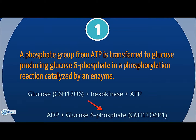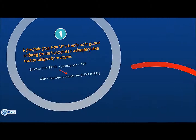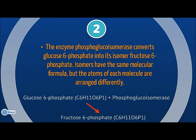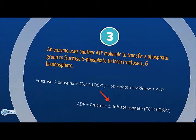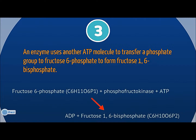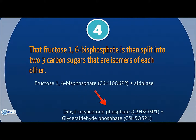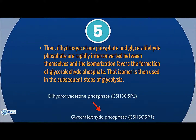The second step is an isomerization of glucose-6-phosphate into fructose-6-phosphate. Third, in another phosphorylation reaction, a second ATP donates a phosphate group to the fructose. The enzyme aldolase then splits the molecule into two 3-carbon sugars. These three-carbon sugars are isomers of each other. The two isomers created, dihydroxyacetone phosphate and glyceraldehyde phosphate, rapidly interconvert between themselves. The isomerization favors the formation of glyceraldehyde phosphate, as it is the isomer used in the subsequent steps of glycolysis.